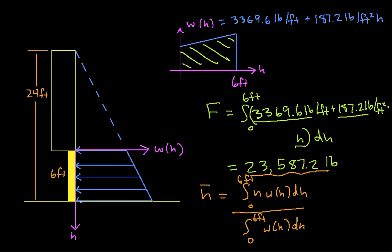So let's go to a nice clean screen and do that. We have the integral from 0 to 6 feet of H. W of H is going to be 3,369.6 pounds per foot plus 187.2 pounds per square foot times H DH.